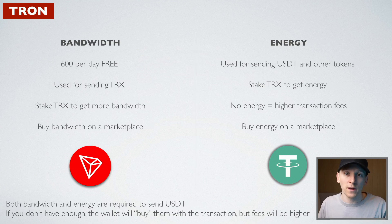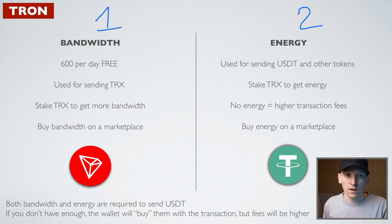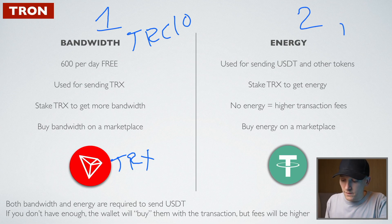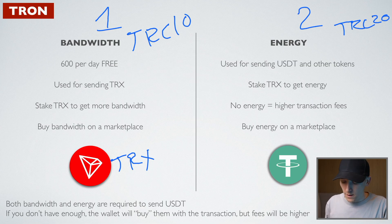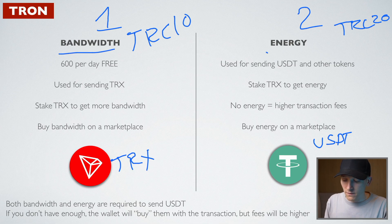Before using the wallet, we have to know how the Tron blockchain charges transaction fees, because it's slightly different depending on which type of token you want to send. It splits transaction fees into two groups. The first group is TRC-10 tokens — these are native tokens issued on the blockchain, and the native coin TRX is a TRC-10 token. The other type is TRC-20 tokens, which are smart contracts built on top of the blockchain — for example, USDT is a TRC-20 token. Transaction fees for these are known as bandwidth and energy respectively.